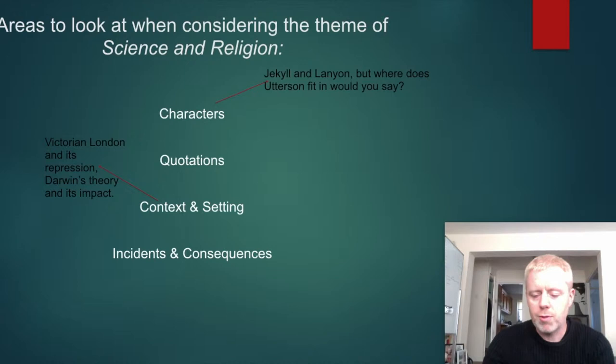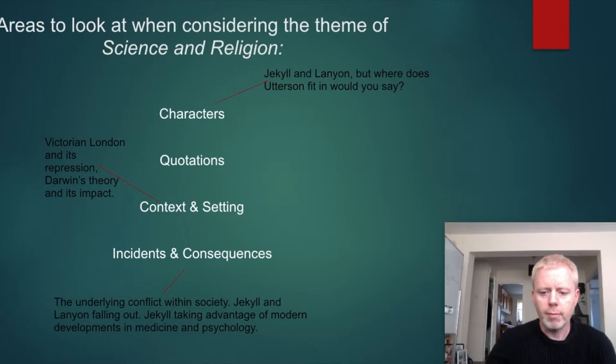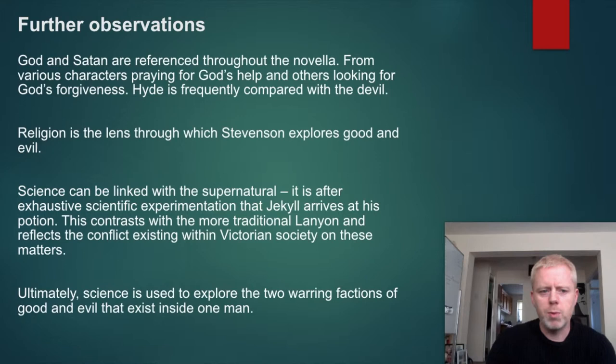Context and setting to consider: Victorian London and its repression, Darwin's theory and its impact on science and religion. Incidents and consequences include the underlying conflict within society, Jekyll and Lanyon falling out, and Jekyll taking advantage of modern developments in medicine and psychology.